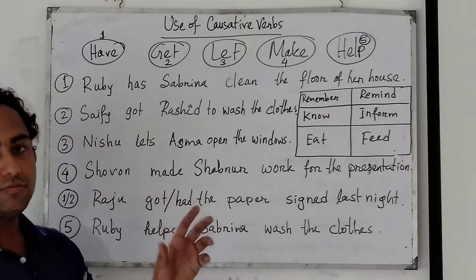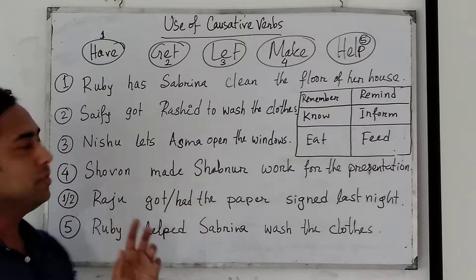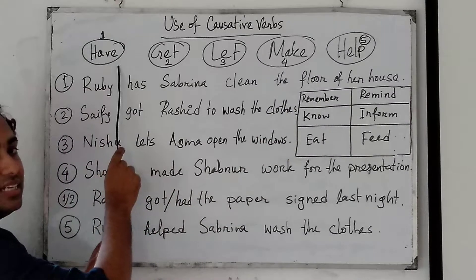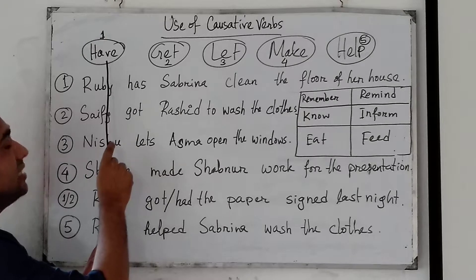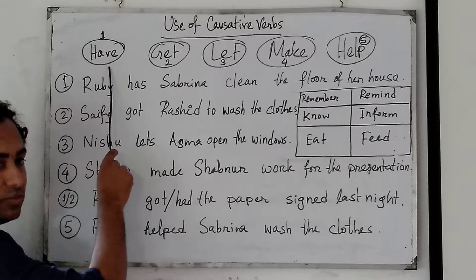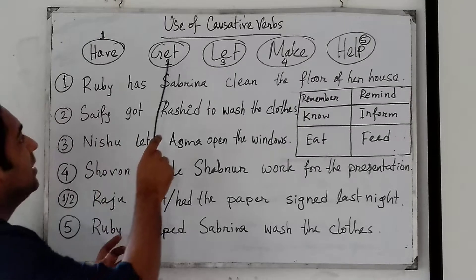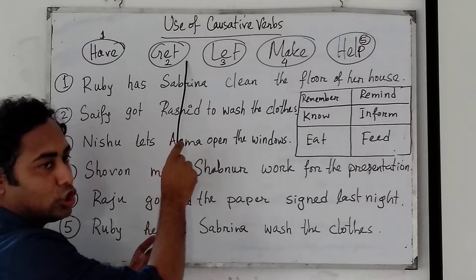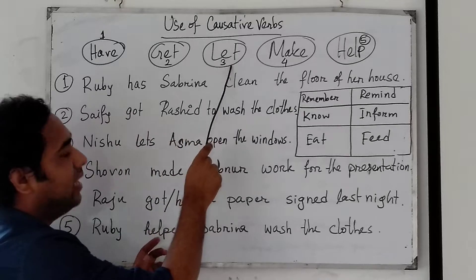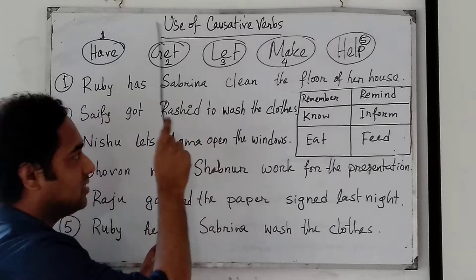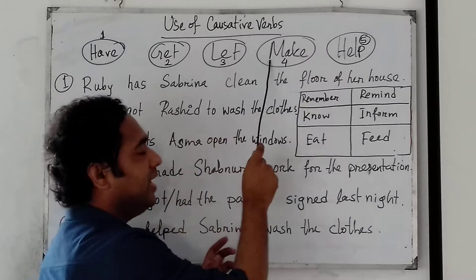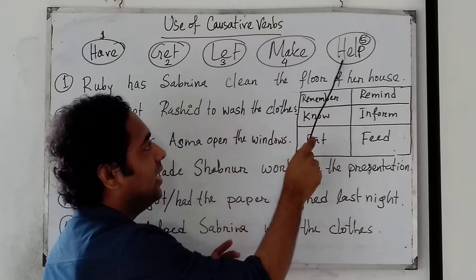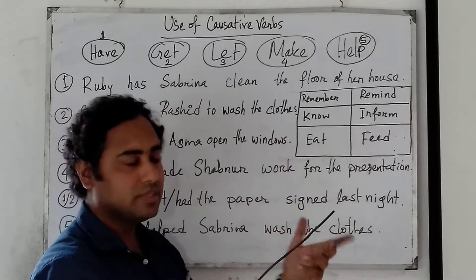Let me give you the past form and past participle form. Have: had, had — and there is 'has' as well. Get: got, gotten. Let: let, let, let. Make: made, made, made. Help: helped, helped.